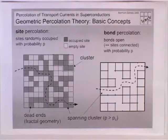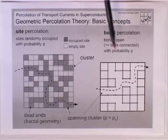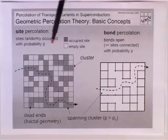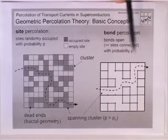Percolation theory can be broadly divided in two types of problems. One is site percolation and one is bond percolation, and for superconductors we can identify the grains with the sites and the grain boundaries with the bonds.